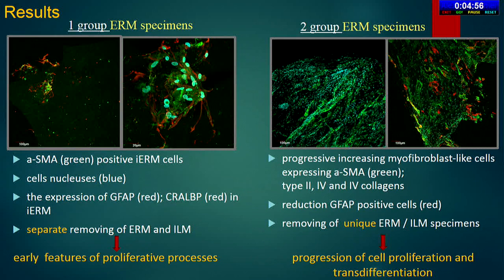In the second group, we revealed a progressive increase in myofibroblast-like cells responsible for the upregulation of type 2, 4, and 6 collagens, along with CD45-positive hyalocytes and a reduction in GFAP-positive cells. We concluded that alpha-SM actin-expressing transdifferentiated retinal Müller and other cells, representing myofibroblast-like cells, are responsible for membrane contraction. At the same time, we revealed that the ERM accumulates more and more extracellular matrix components, resulting in macular reorganization.